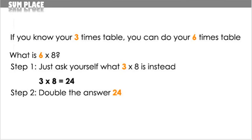Next, double the answer to step 1, which is 24. Double 24, which is the same as multiplying it by 2, equals 48. 24 times 2 equals 48. And that's your answer: 48. 6 times 8 equals 48.